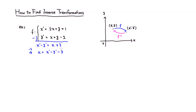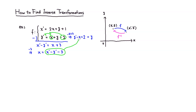We found x. Now we need to find y. I'll use the second equation and solve it for y. We can simply move x over to the other side and also move negative 2 over — so subtract x and add 2. This gives y prime minus x plus 2, and y is all by itself. Since we already know that x equals x prime minus y prime minus 3, we can just plug that in.